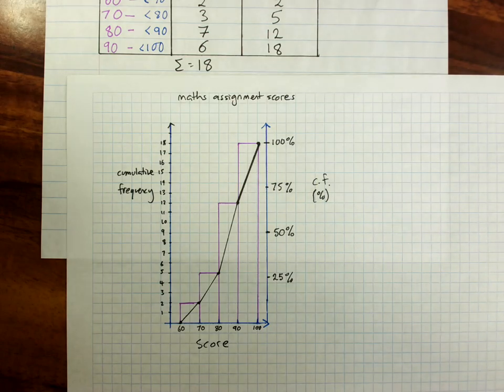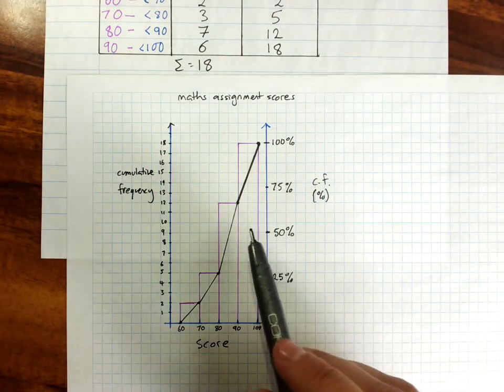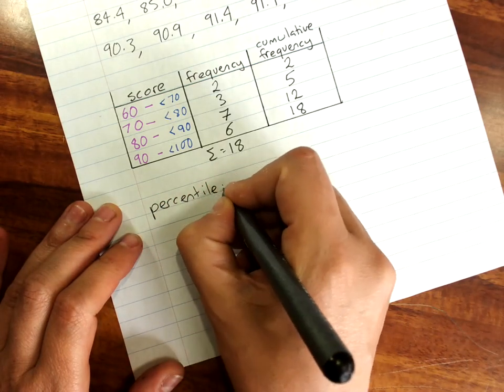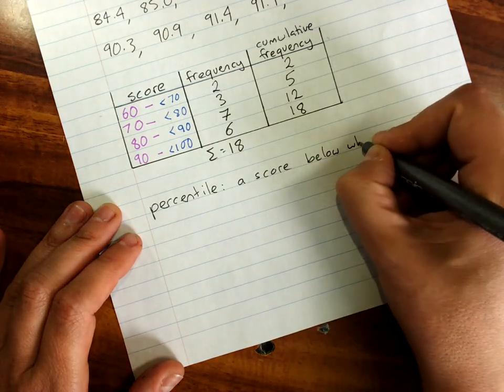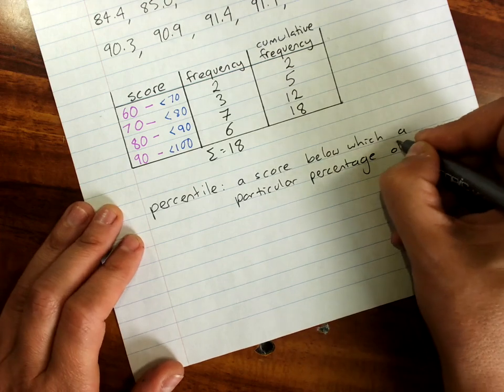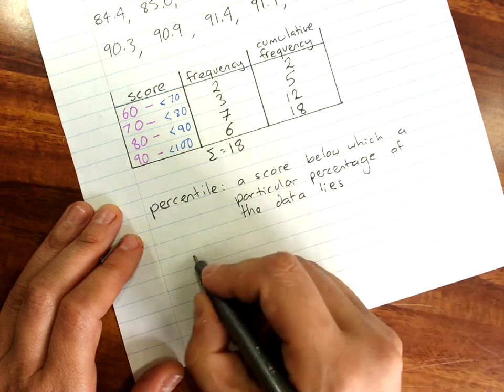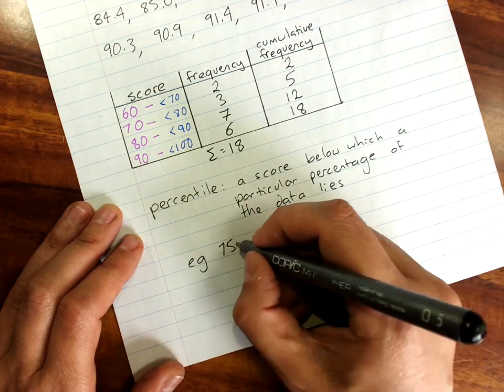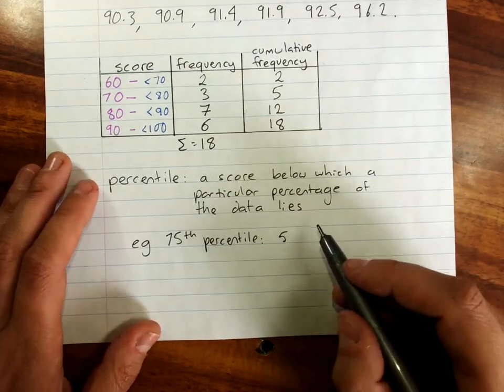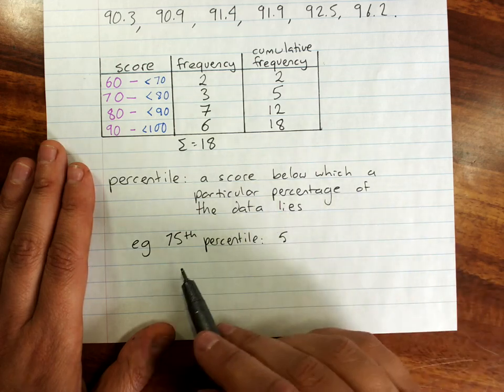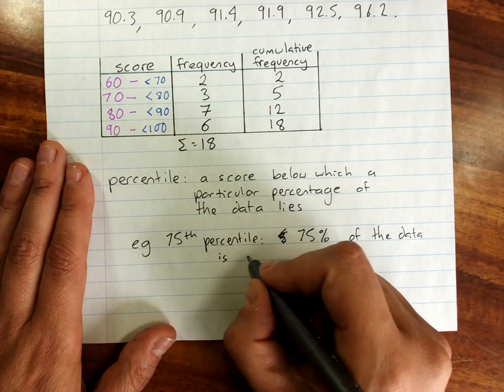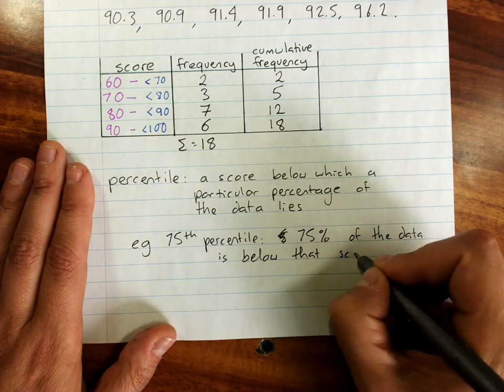Now, what the percentiles mean is they are a score below which a particular percentage lies. We'll define that. I got distracted. The percentile is a score below which a particular percentage of the data lies. So the 75th percentile, 75% of the data is below that score.